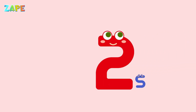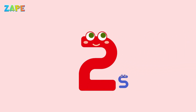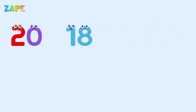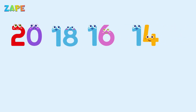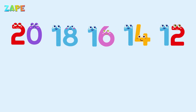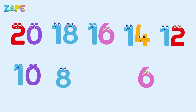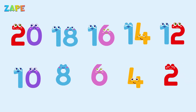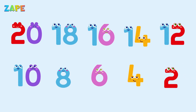Let's start with counting backward by twos. We go down by two each time. 20, 18, 16, 14, 12, 10, 8, 6, 4, 2. Good job. You just counted backward by twos.